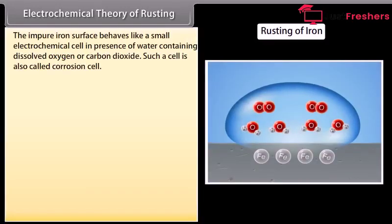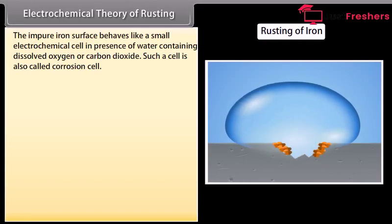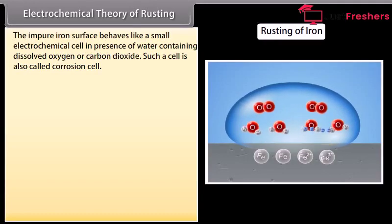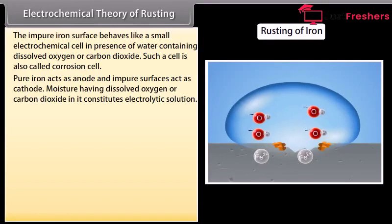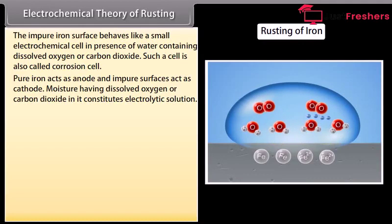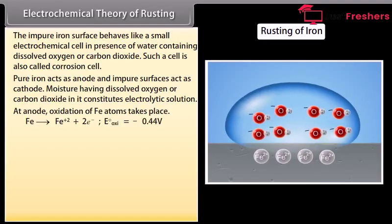Electrochemical theory of rusting. According to this theory, the impure iron surface behaves like a small electrochemical cell in presence of water containing dissolved oxygen or carbon dioxide. Such a cell is also called corrosion cell. Pure iron acts as anode and impure surfaces act as cathode. Moisture having dissolved oxygen or carbon dioxide in it constitutes electrolytic solution. At anode, oxidation of iron occurs.